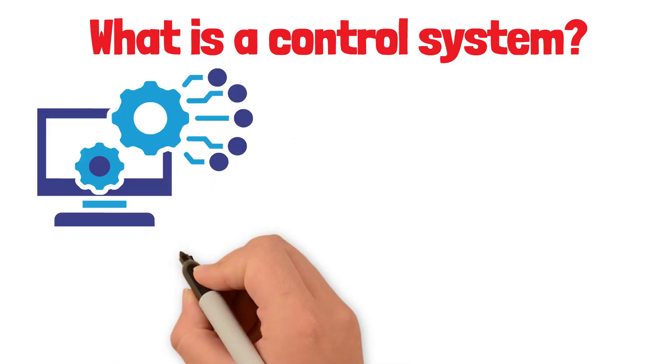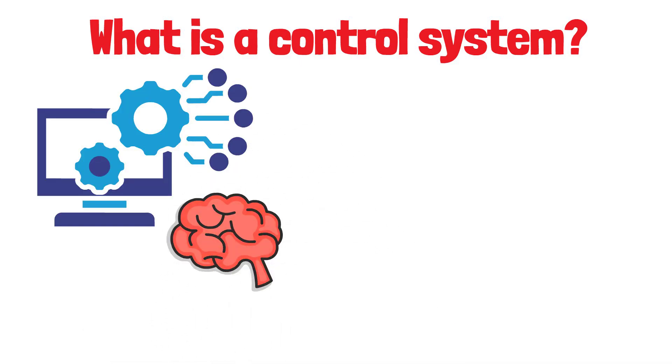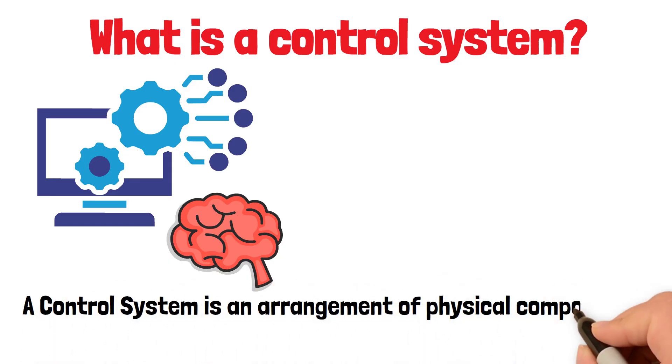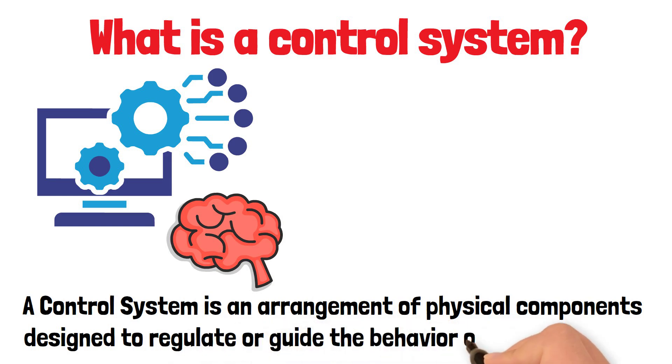In simple words, it's like a brain for machines. Famous definition: a control system is an arrangement of physical components designed to regulate or guide the behavior of other systems.